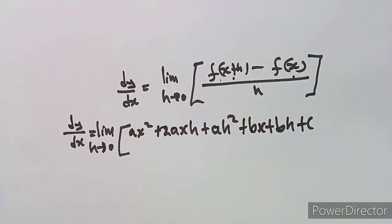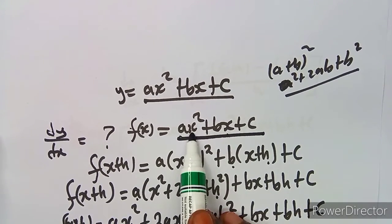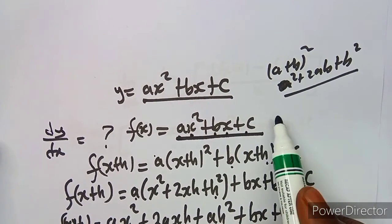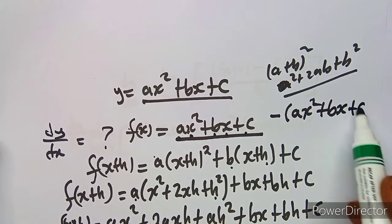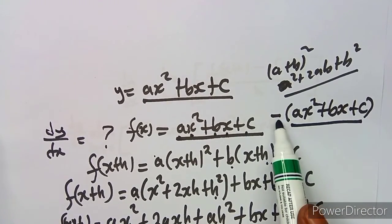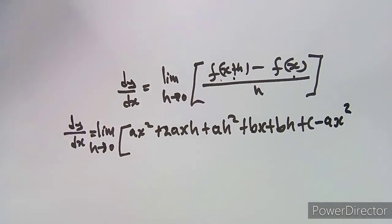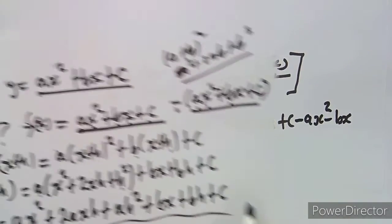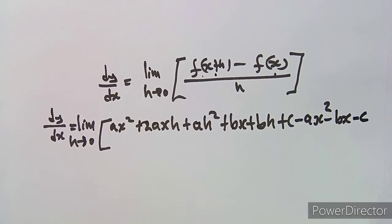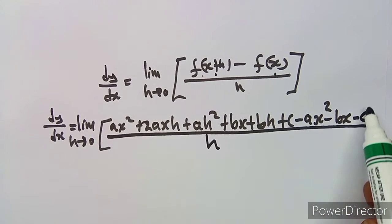When subtracting F(x), the minus sign affects everything: minus into (ax² + bx + c) gives minus ax², minus bx, and minus c. So the full numerator is ax² + 2axH + aH² + bx + bH + c minus ax² minus bx minus c, everything still over H.